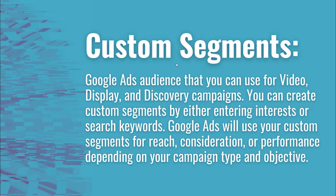Custom segments in Google Ads are a type of audience that you can create and then use for your video, display, and discovery campaigns. You can create your own custom segments by entering interests or search keywords — terms that people are actually typing into Google or YouTube. Google Ads will use your custom segments for reach, consideration, or performance depending on your campaign type and objective. For example, if you're running a campaign set up to drive sales and you're using conversion tracking, they will use your custom segments for performance to help drive more conversions.